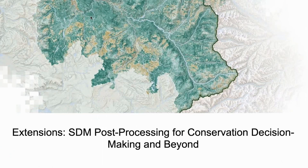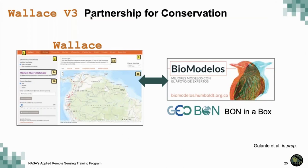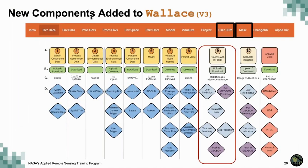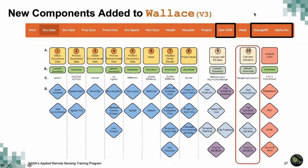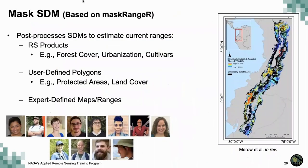We have now been working on what will be version three, which focuses on post-processing for conservation. This has been funded by NASA and produced in collaboration with the Humboldt Institute in Colombia and their Biomodelos group. It has been dubbed a BON-in-a-Box — a biodiversity observation network analysis tool. What we've been doing is adding new components: one to process with remote sensing data and one to calculate indicators. Those two are based on packages called MaskRanger and ChangeRanger, which were first developed as independent R packages and then integrated into Wallace.